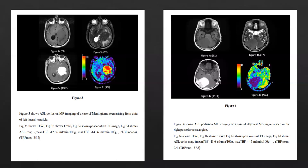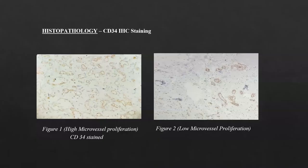The atypical meningioma had RTBF mean of 0.4 and RTBF max of 37.5. On CD34 immunostaining, representative slides were obtained: Figure 1 shows CD34-stained slide with high microvessel proliferation, with brown-colored stained vessel walls clearly visible, and Figure 2 shows a slide with low microvessel proliferation.